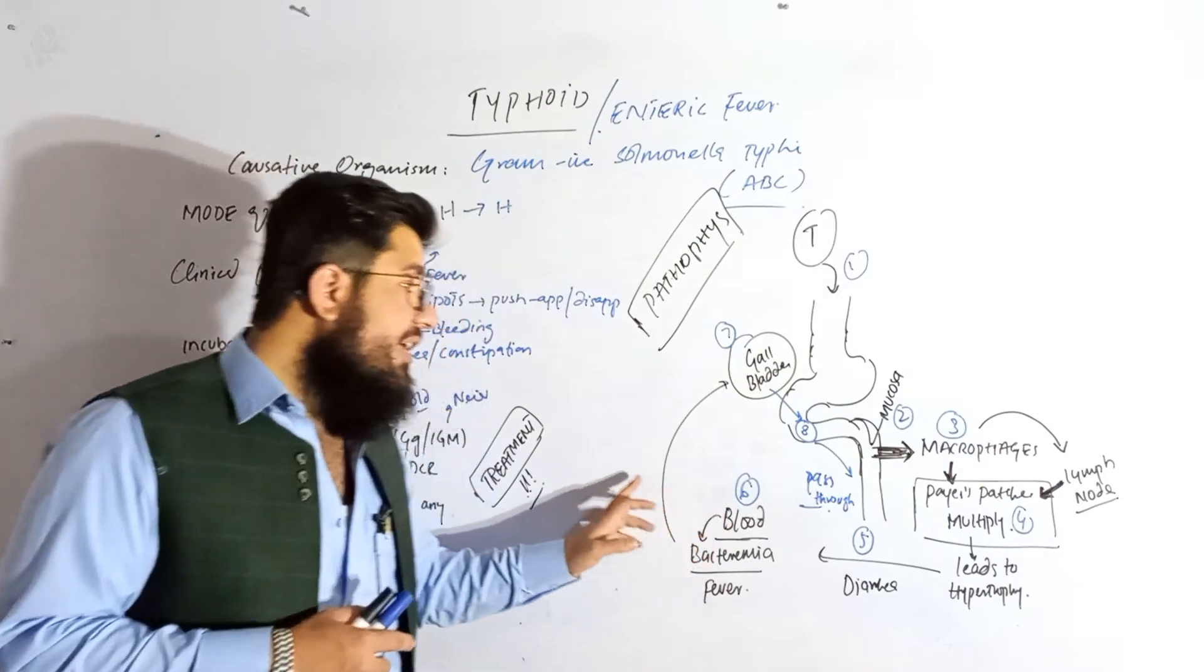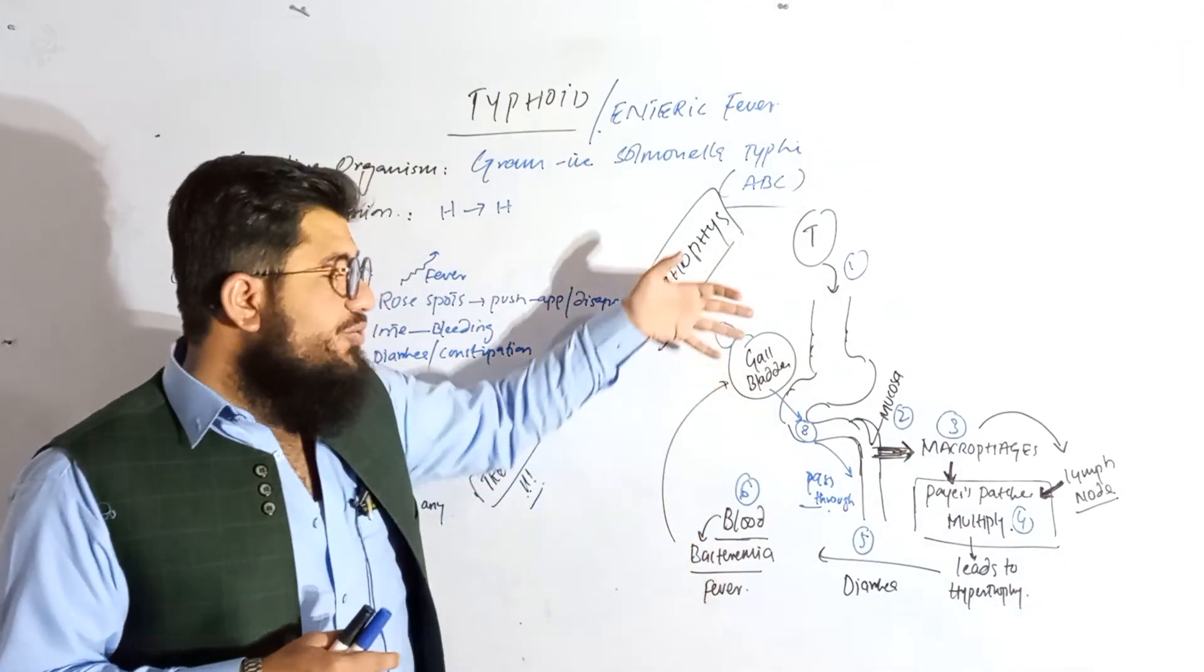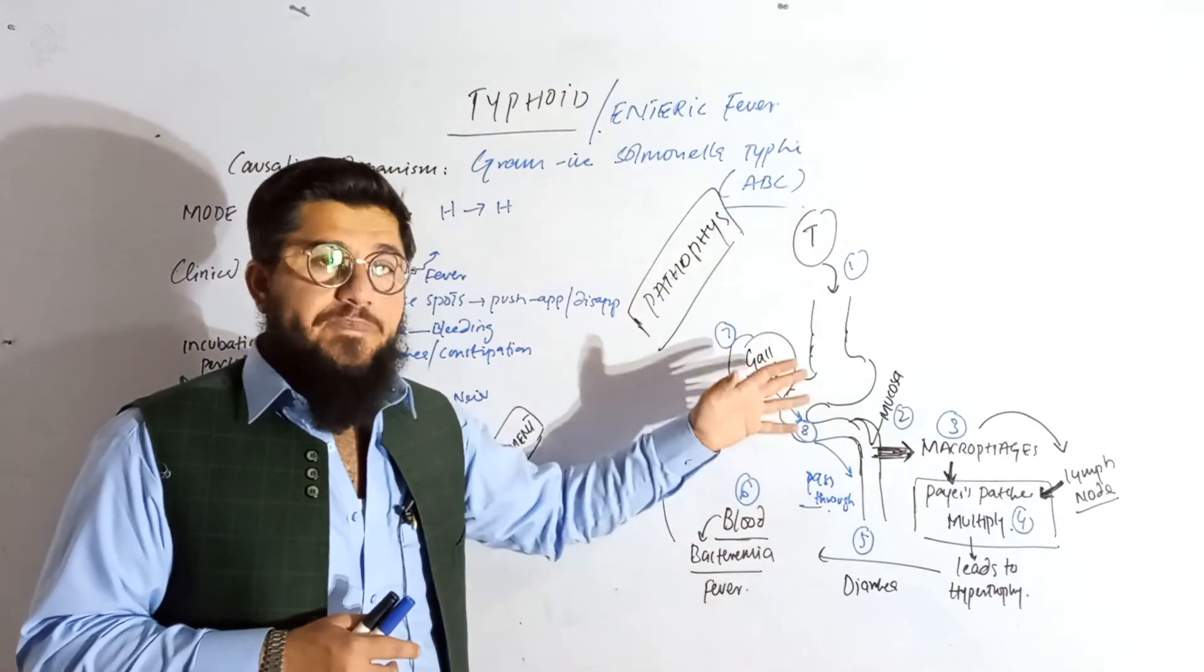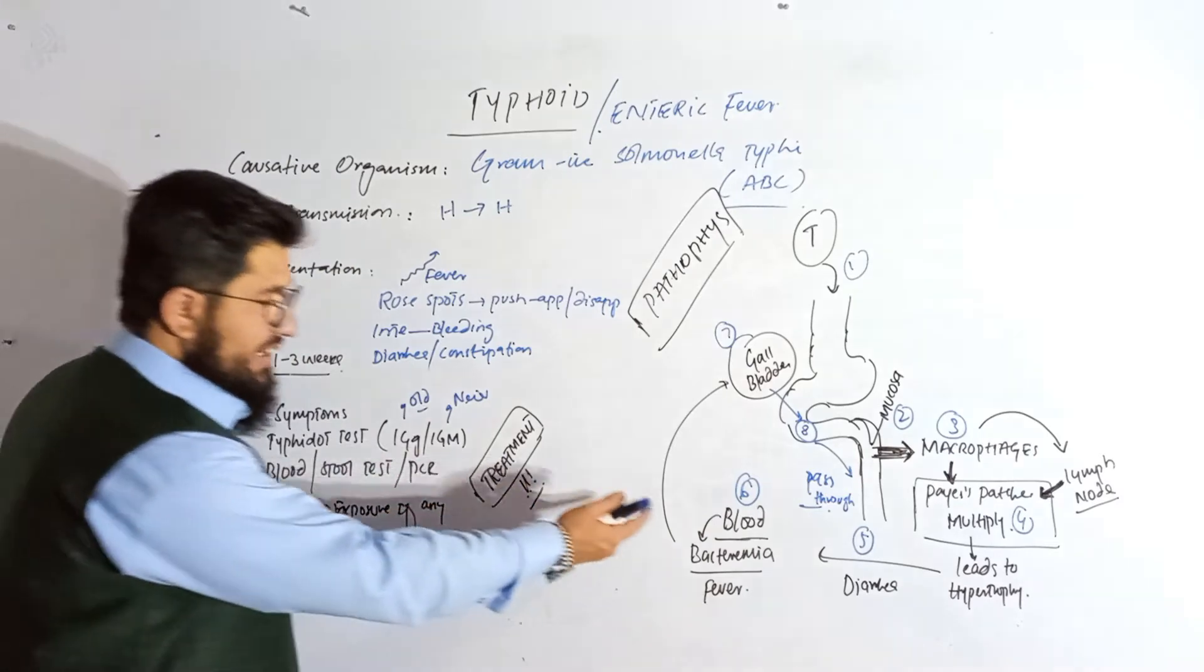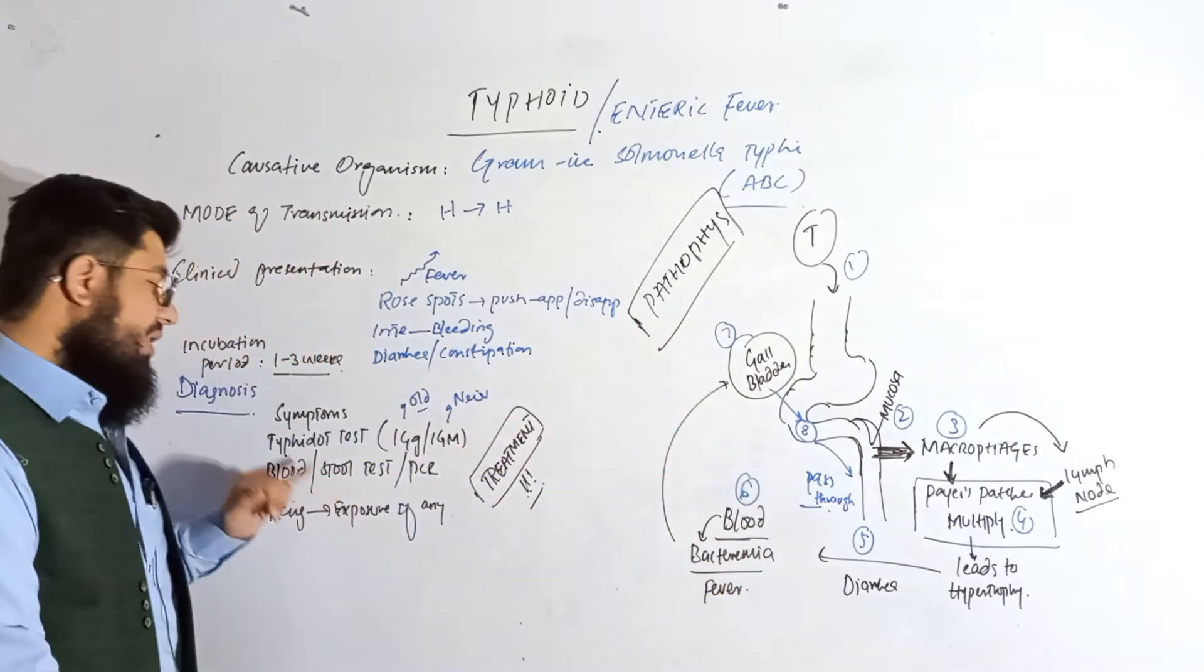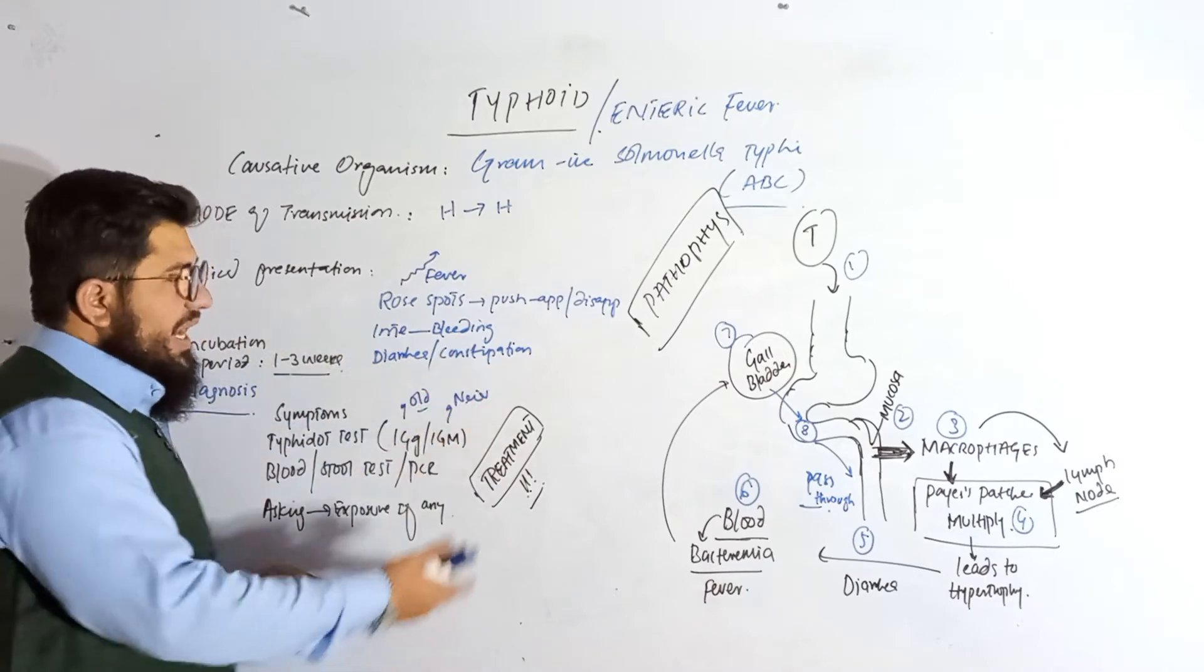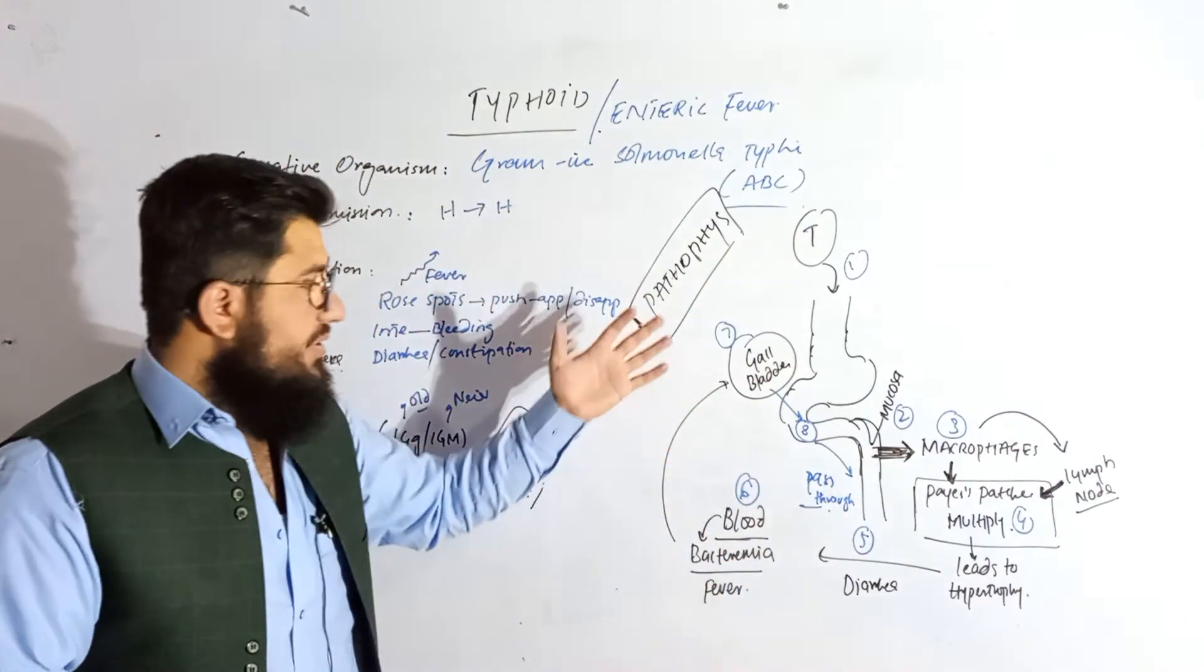After that, it will move through into the gallbladder through the biliary system and then it will be excreted via stool. That's why we go through the blood tests, because it can be seen in the blood, and we go through the stool test because it can also be seen in the stool. Antibodies are also seen, and these are all those methods. This is the pathophysiology of the enteric fever or of the typhoid.